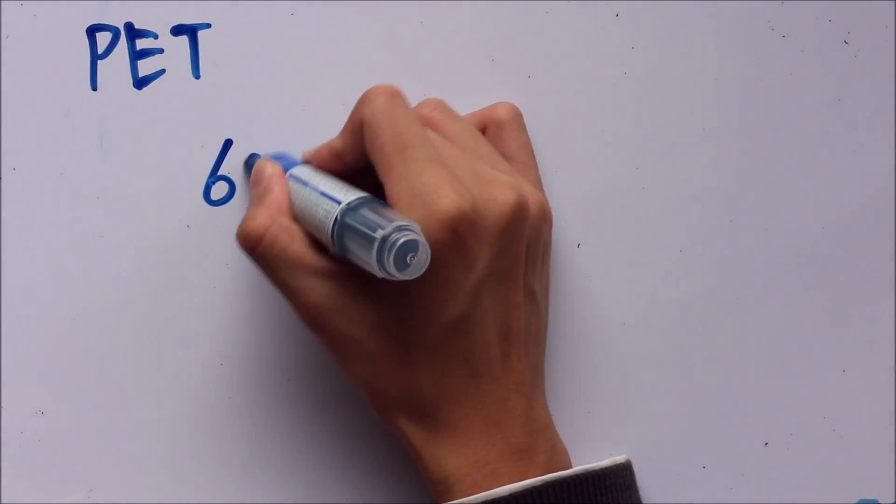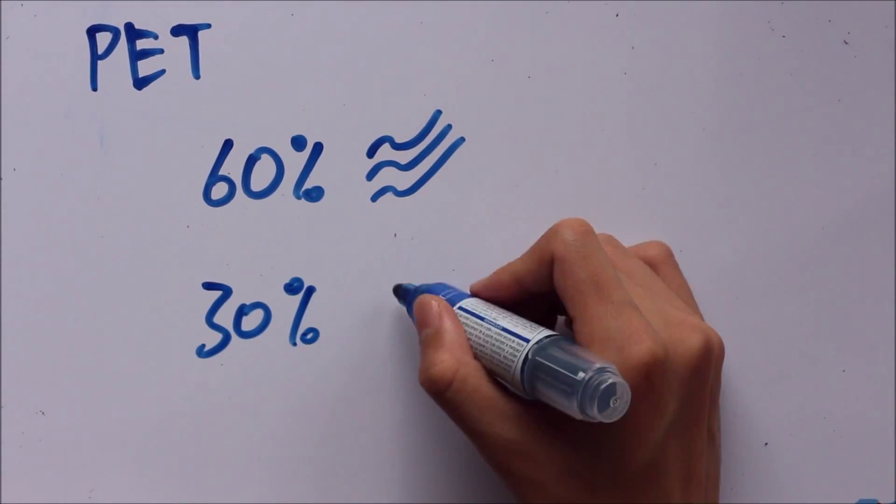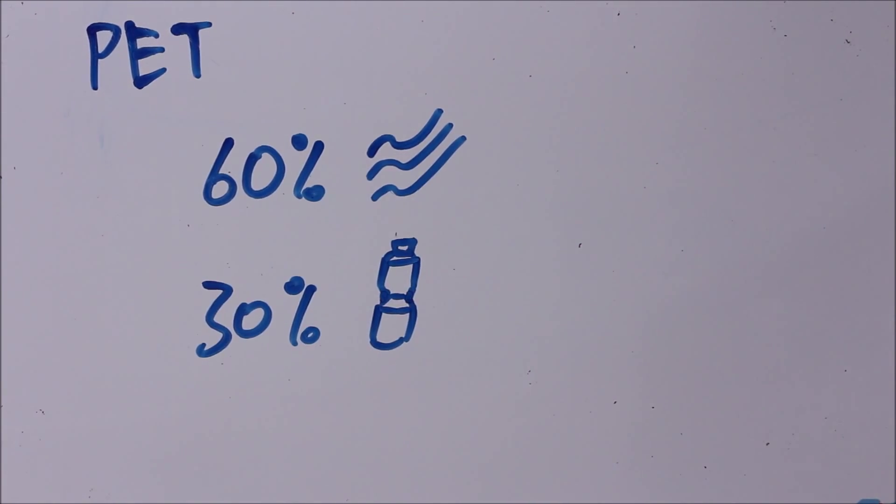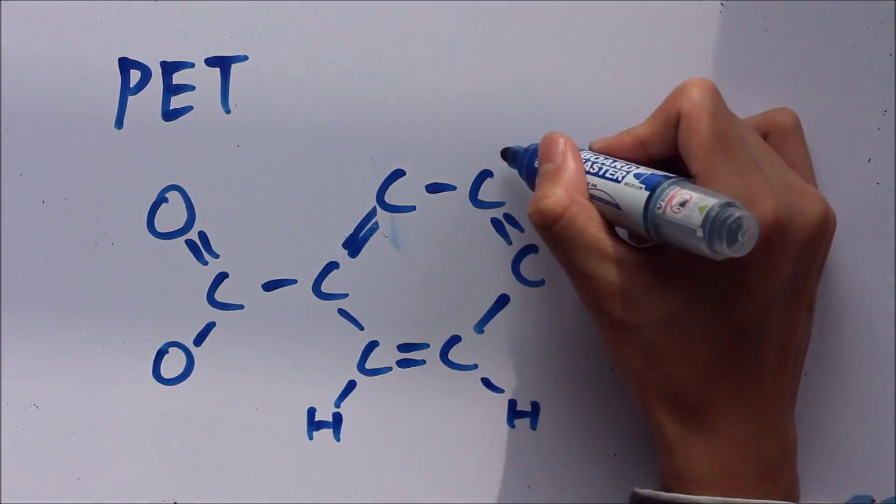This polymer is mostly used in synthetic fibers, more than 60% of the time. The other 30% being in bottle production. This is the molecular structure of PET.